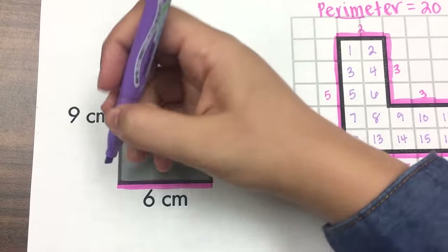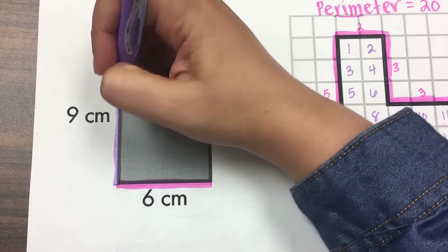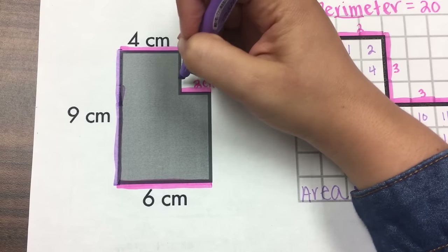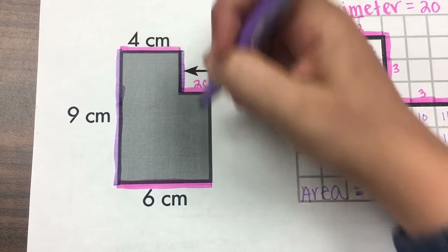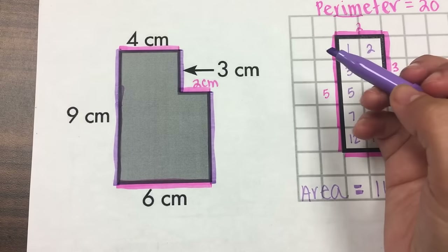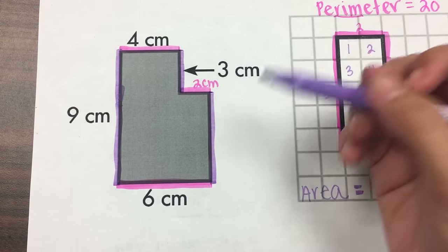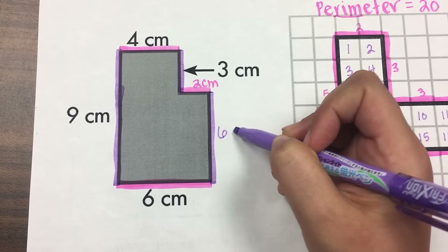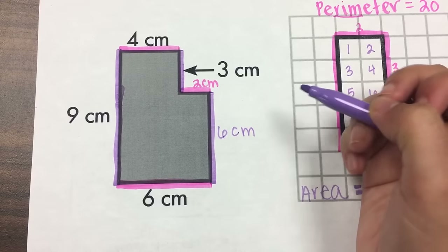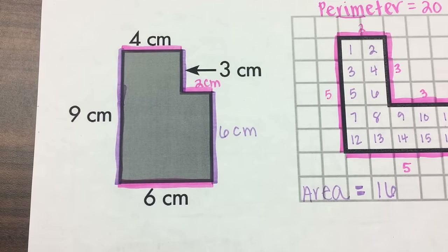Then on this side, I know that this side is equal to 9, which means that this 3 plus this has to equal 9 as well. So if I have 9 as my total, then 3 plus 6 more would give me 9. 6 plus 3 is 9. Now that I have all of my numbers, I'm able to find the perimeter.